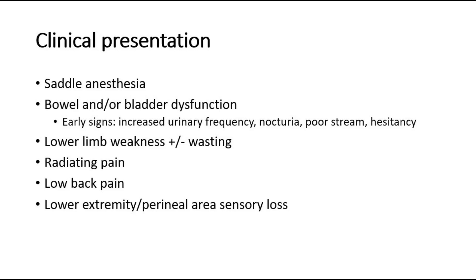Lower limb weakness affecting both legs may be present, and there might be some muscle wasting if the cause is chronic. Other features include radiating pain affecting both legs, lower back pain, and sensory loss in the lower extremity or perineal area.